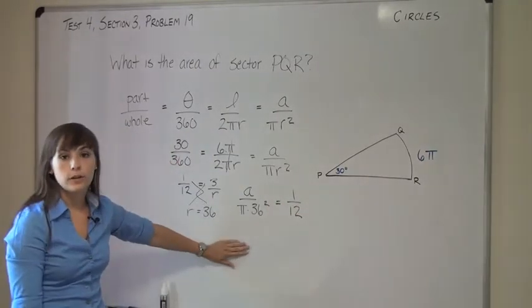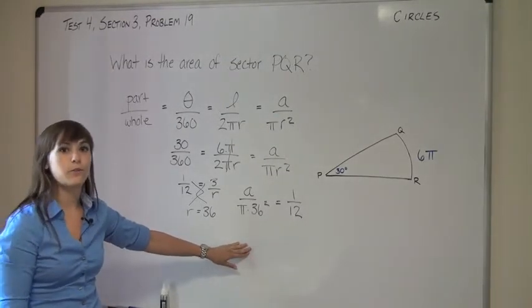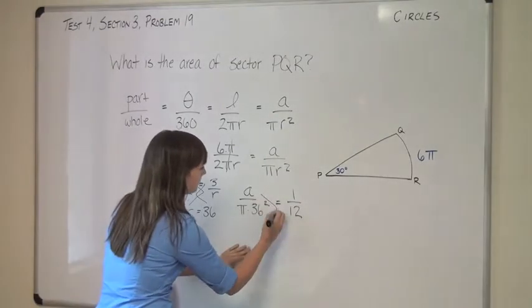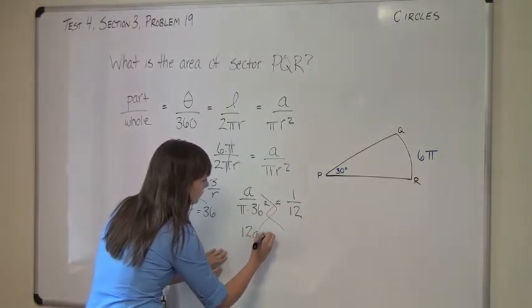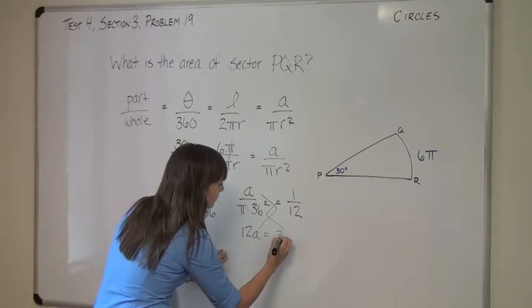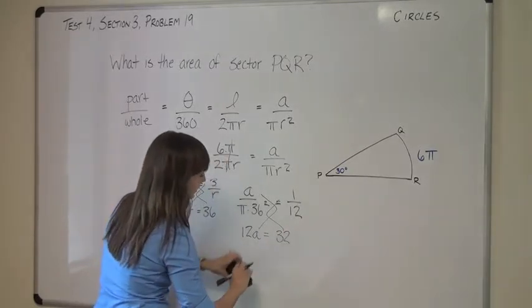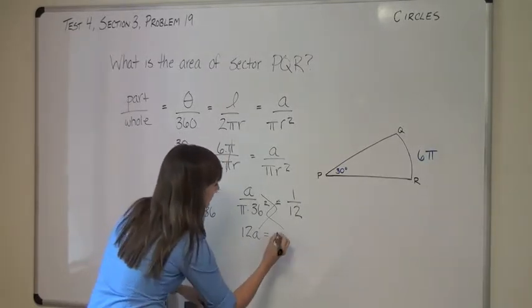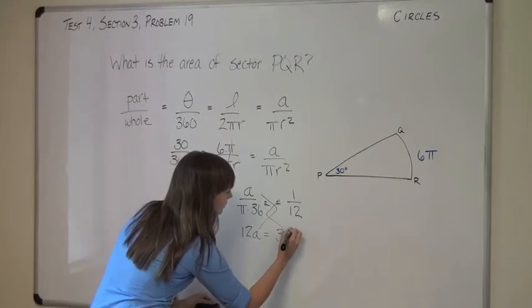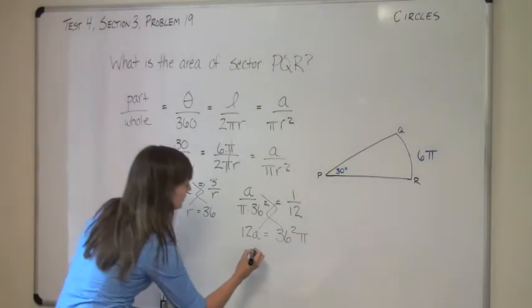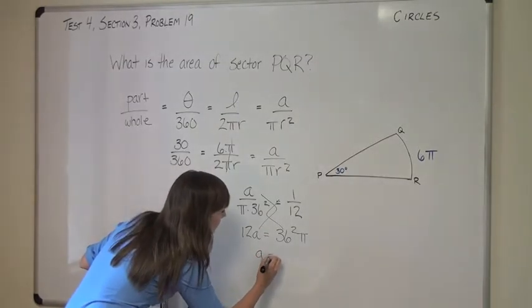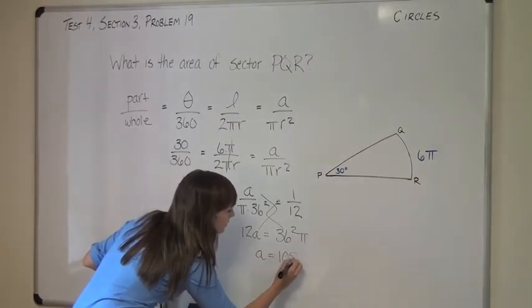Cool, now you have an equation that will allow you to solve for A. Anytime you have two fractions, cross multiply. 12A equals 36², not 32, 36² π. If you divide both sides by 12, you'll get A is equal to 108π.